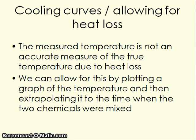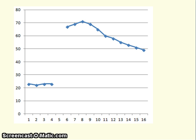The last thing to consider is cooling curves and allowing for heat loss. When we measure the temperature of a reaction, the temperature we measure is not an accurate measure of the true temperature — this is due to heat loss. We can make allowances for this by plotting a graph of the temperature and then extrapolating it to the time at which the two chemicals were mixed. This sounds complicated but it's actually quite straightforward.